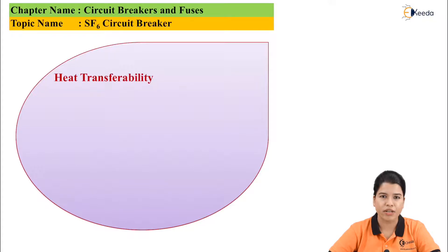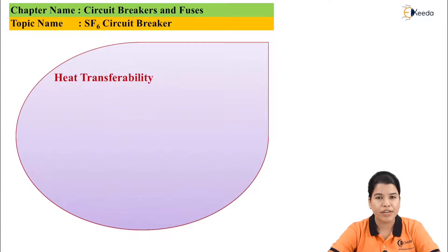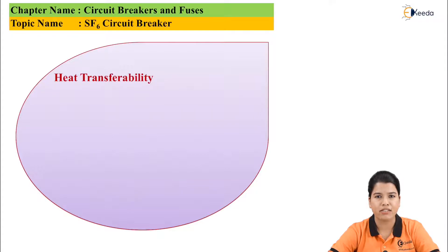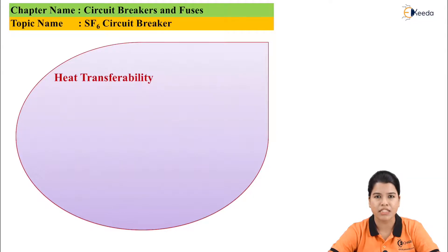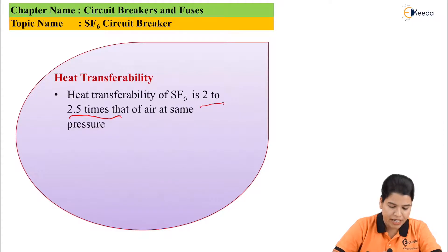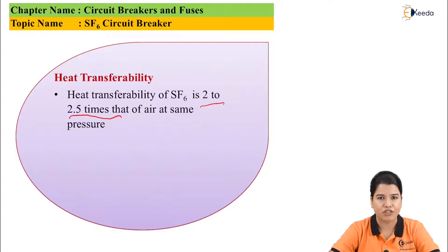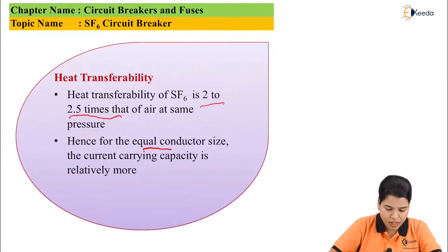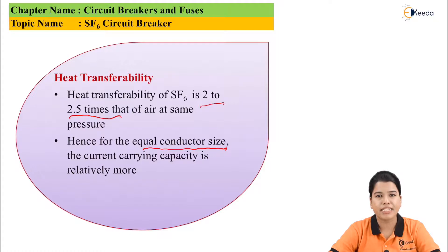The next property is heat transferability, which is very important in the arc quenching process. When the contacts are separated and an arc is struck between them due to heavy current, the temperature increases. One method of eliminating the arc is by cooling it. If the arc quenching medium has a high value of heat transferability, it is better. The heat transferability of SF6 gas is about 2 to 2.5 times that of air at the same temperature and pressure, so for equal conductor size the current carrying capacity is relatively high.